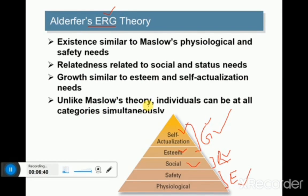Unlike Maslow's theory, individuals can be at all categories simultaneously. Maslow assumed that an individual must fulfill their needs in an order — first physiological, then safety, then social, then esteem, and finally self-actualization. Maslow's view was that at the same time two needs cannot be fulfilled simultaneously — that is not possible in his hierarchy.